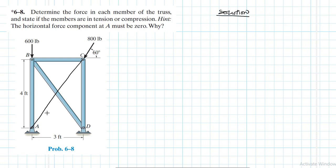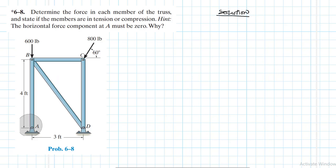If we had such a member connection at A, it would make the structure statically indeterminate. Since we don't have such a connection here, we expect just one axial force throughout member AD.